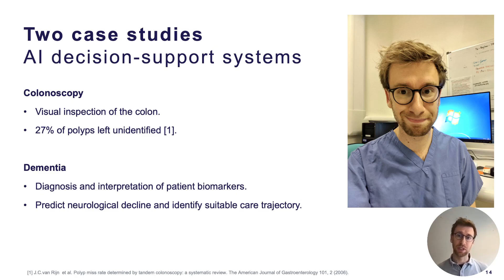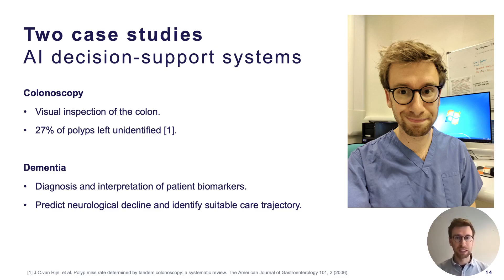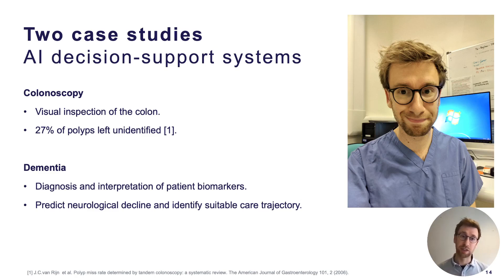A challenge in colonoscopy is that a lot of the polyps which the clinician is looking for using an endoscope are left unidentified — around one in four. AI algorithms aim to support clinicians in identifying and localizing these polyps. In dementia, the aim is to predict neurological decline and identify suitable care trajectories. This is difficult because there is still a lot unknown, and it also requires the integration of multiple biomarkers from different areas of expertise. Both case studies cover all three model stages and focus on individual clinical encounters. I'll go through each stage and present the various challenges we identify, illustrating them using these case studies.